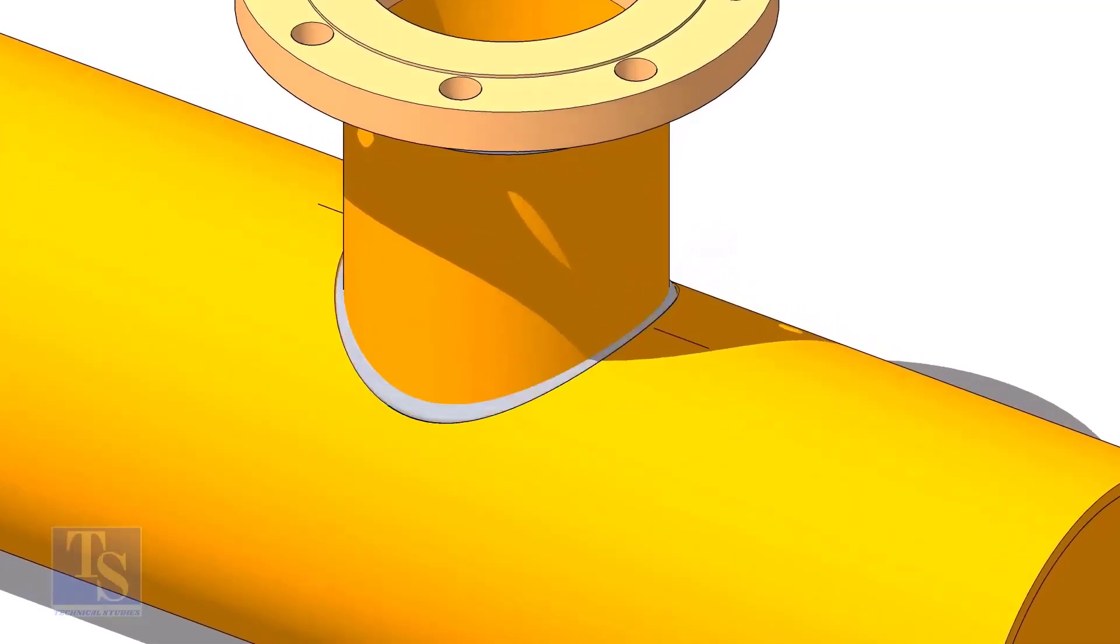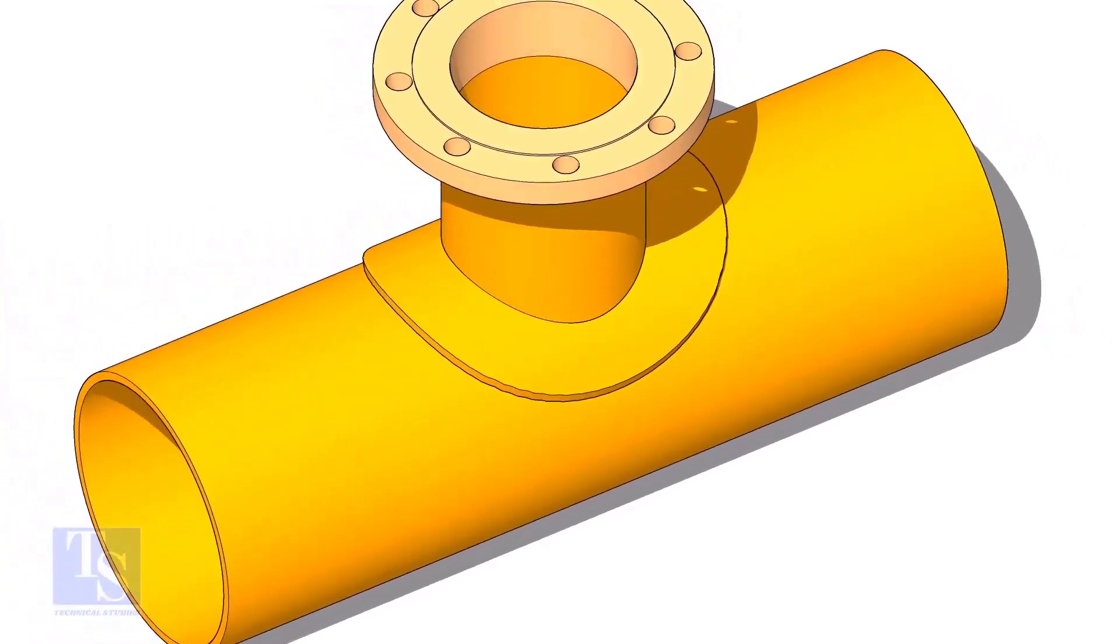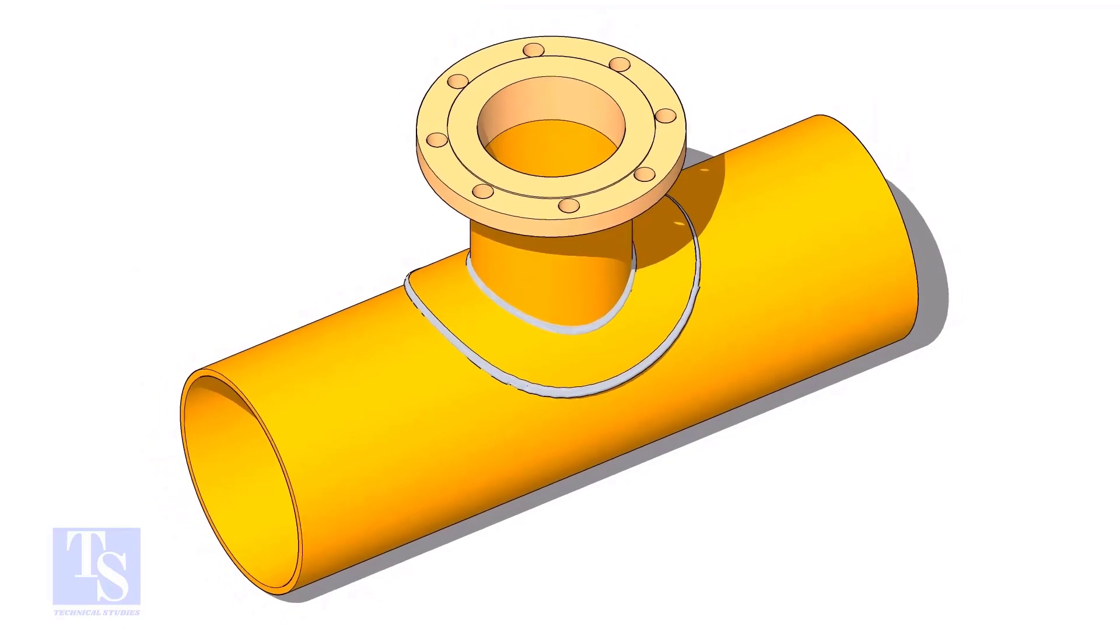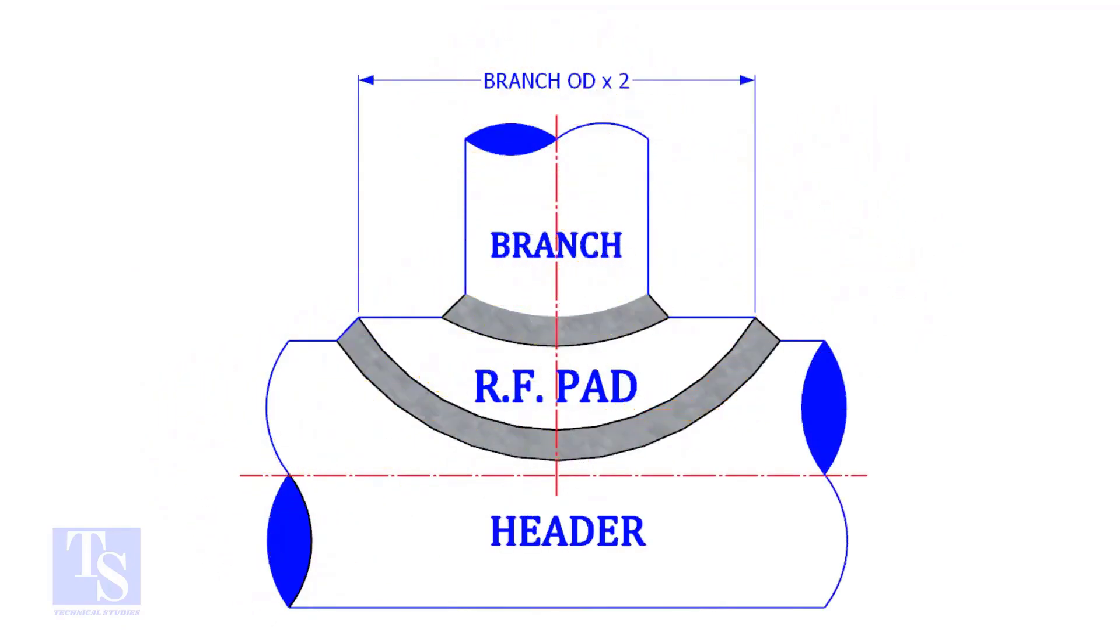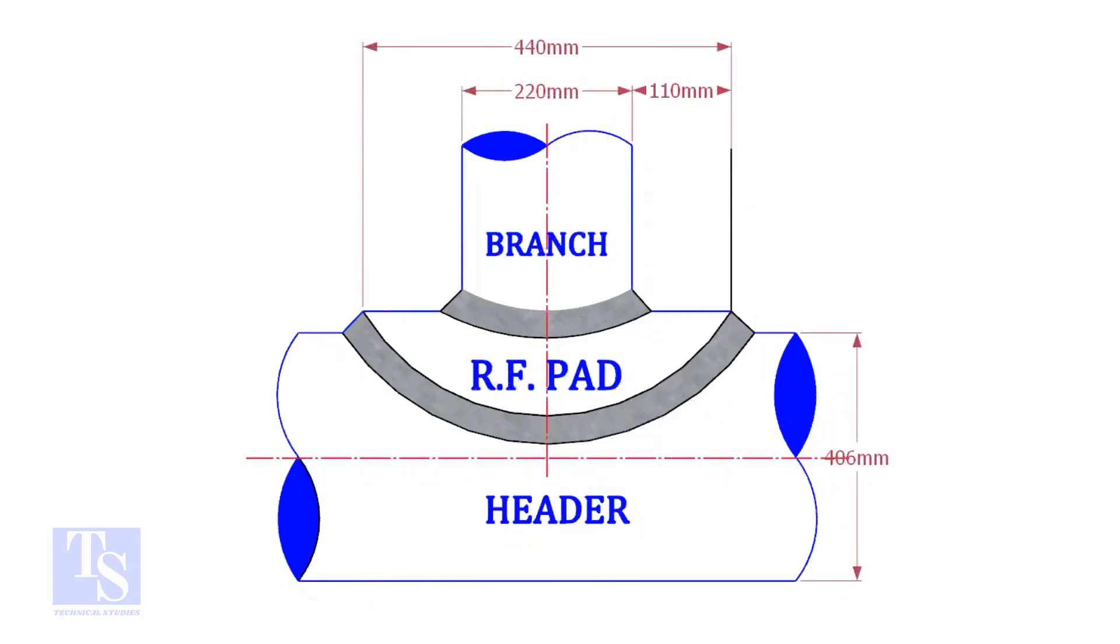A reinforcement pad or RF pad is used to strengthen the fabricated or welded pipe branch connection joints. Usually, the outer diameter of an RF pad is double the OD of the branch pipe. The OD of our branch pipe is 220 mm, so the outer diameter of our RF pad is 440 mm.